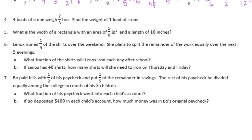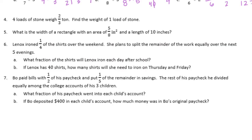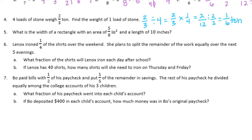Number four. Four loads of stone weigh two-thirds of a ton. Find the weight of one load of stone. We want to take this two-thirds and divide it into four equal parts so that we know how much one of them weighs. That would be the same as doing two-thirds times one-fourth, or two-twelfths. We can divide both of those by two and get one-sixth ton each.